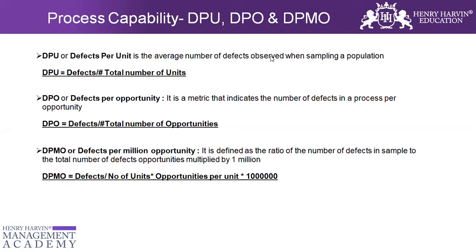While calculating the process capability, we have defects per unit and defects per opportunity. Defects per unit is applicable in the case when we don't have any sort of opportunities in any of the units. So if we have 100 units which have been produced and out of 100 units we have 5 defects, defects per unit is simply defects divided by total number of units.